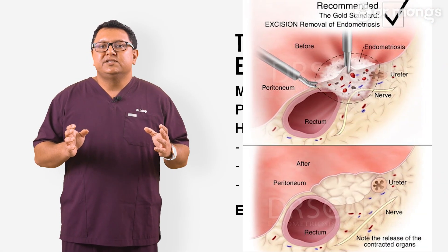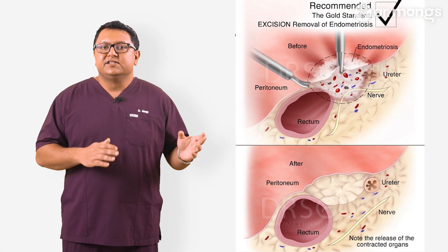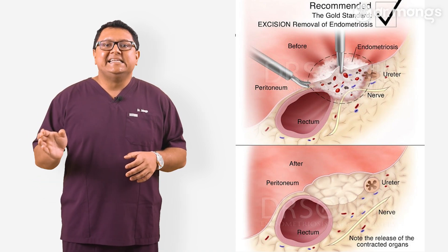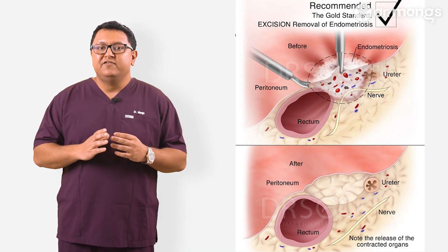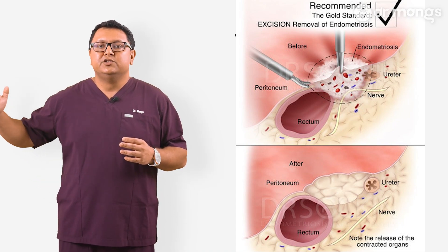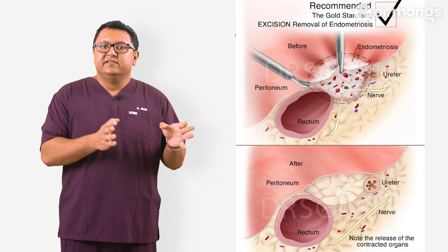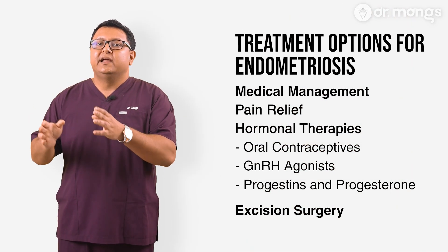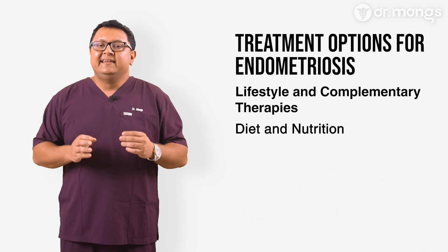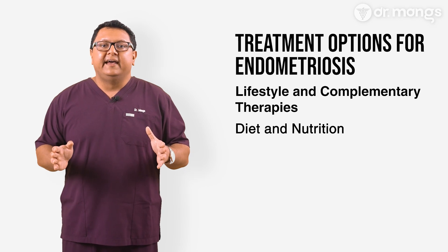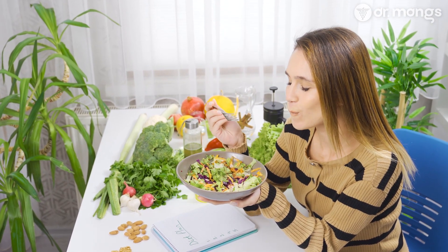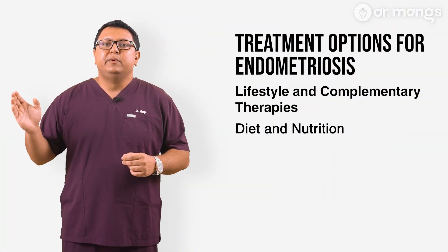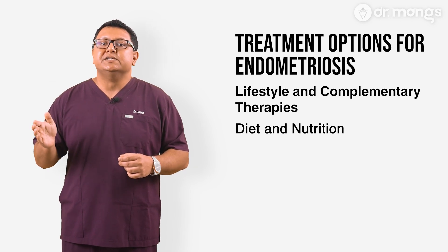Excision surgery is the most effective surgical treatment for endometriosis. The goal is economic radicalism — where we strive to be radical towards removing the disease, but conservative towards functions like bladder, bowel, sexual, and reproductive ones. An anti-inflammatory diet and certain supplements may also help manage symptoms. While more research is needed, some women find relief through dietary changes.